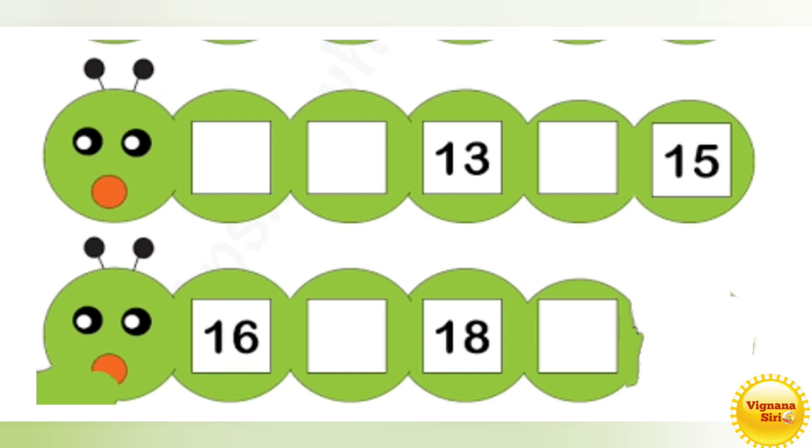Now, so there are some missing numbers from 11 to 19. We will write the missing numbers. So we will start from 11. So what is the number 11? 1, 1, 11. After 1 we have to write 2. So 1, 2, 12. Again after 12 it's 13. So it's already given.